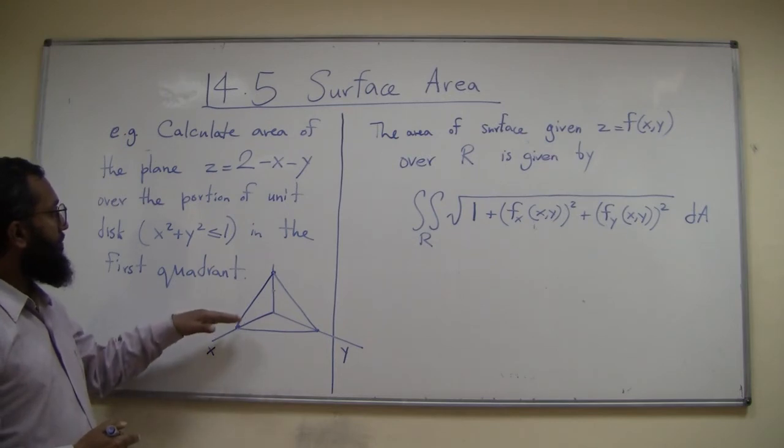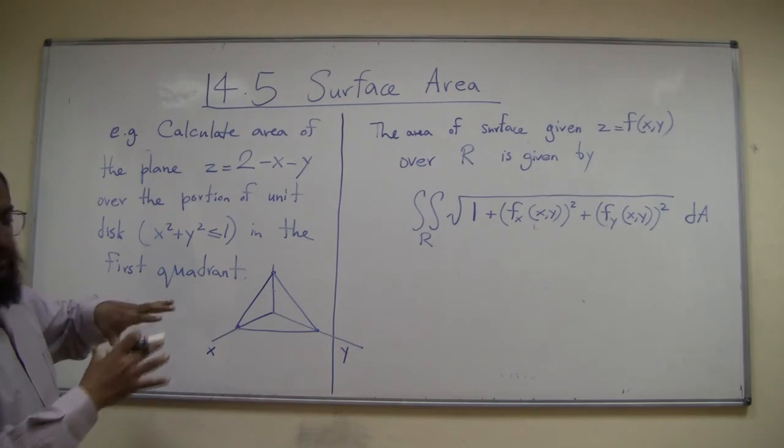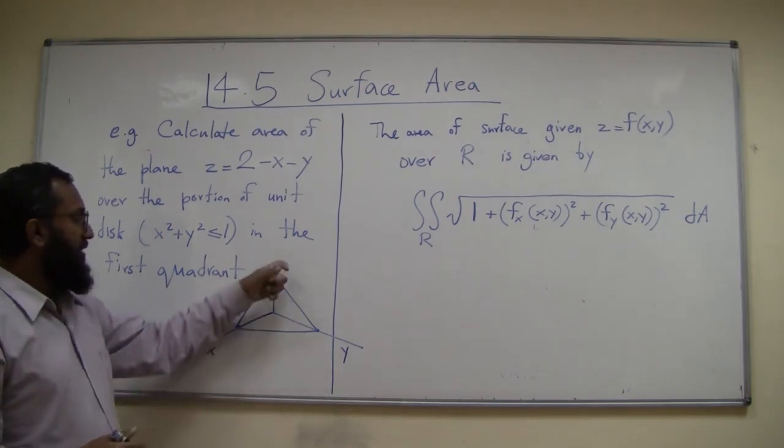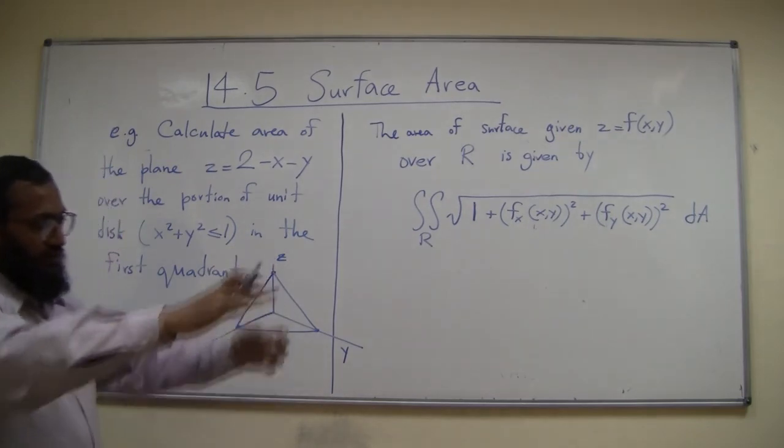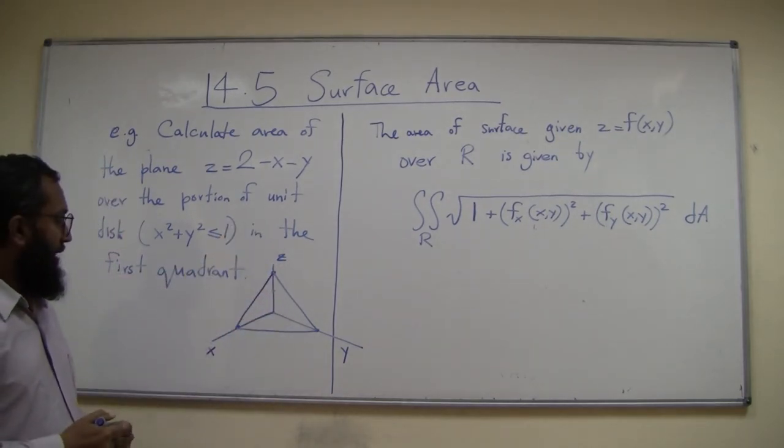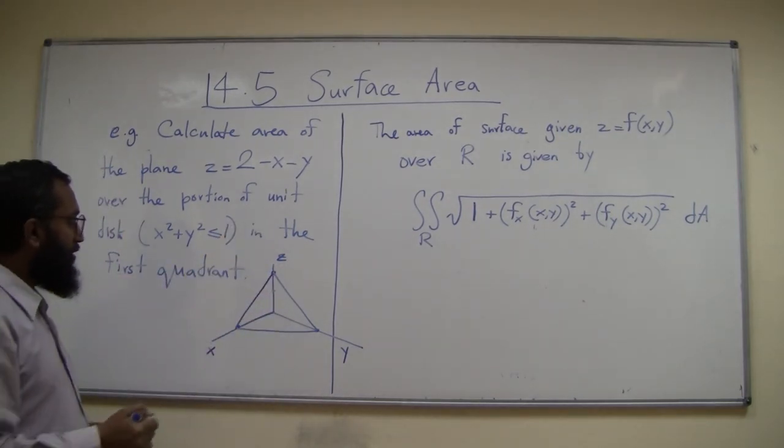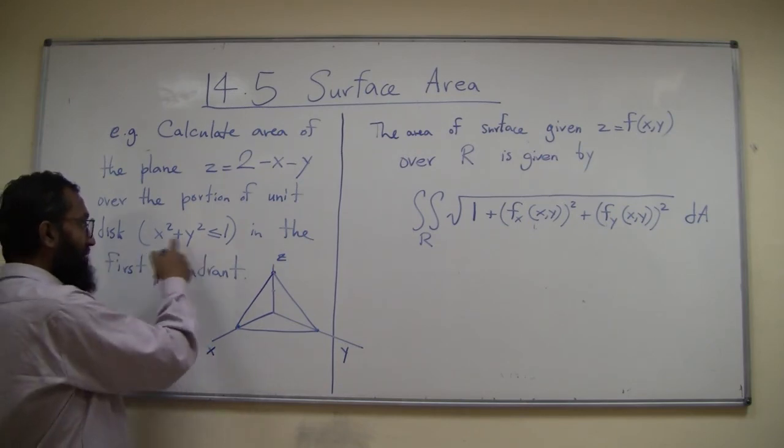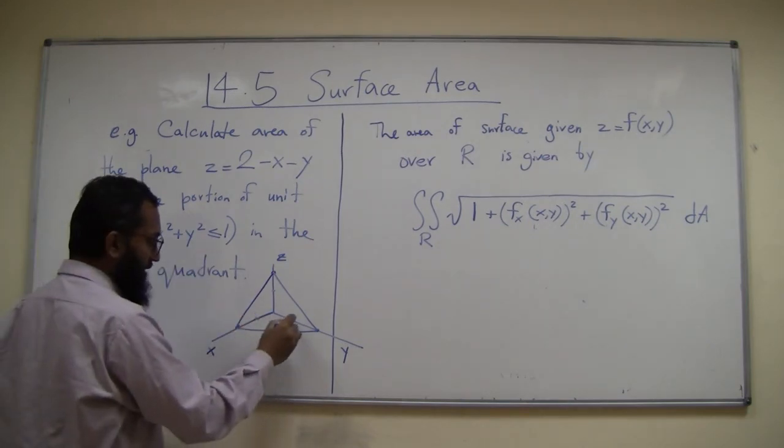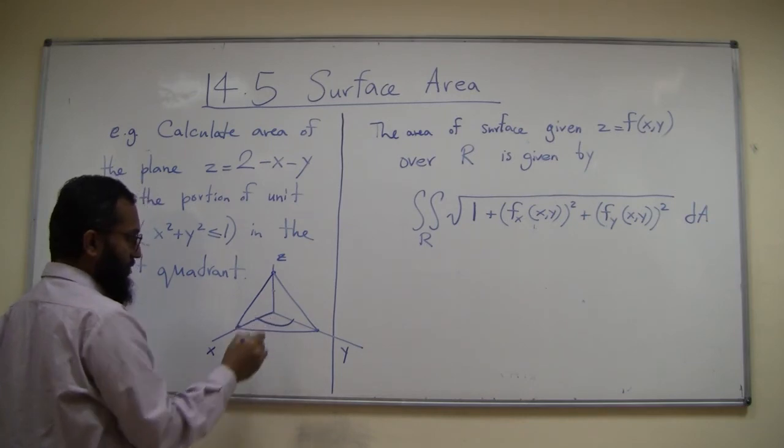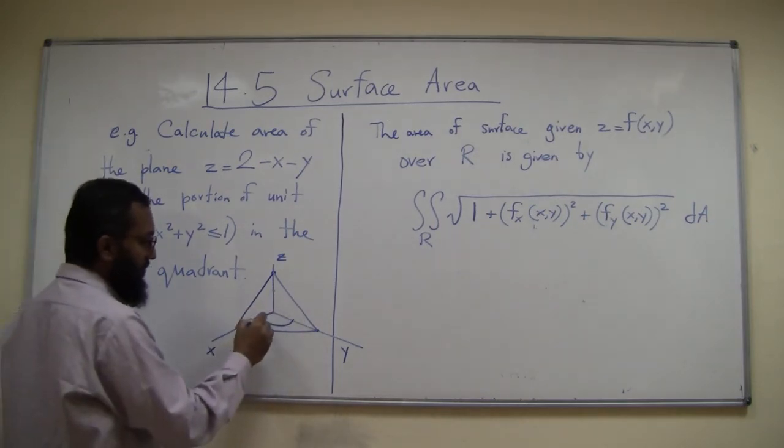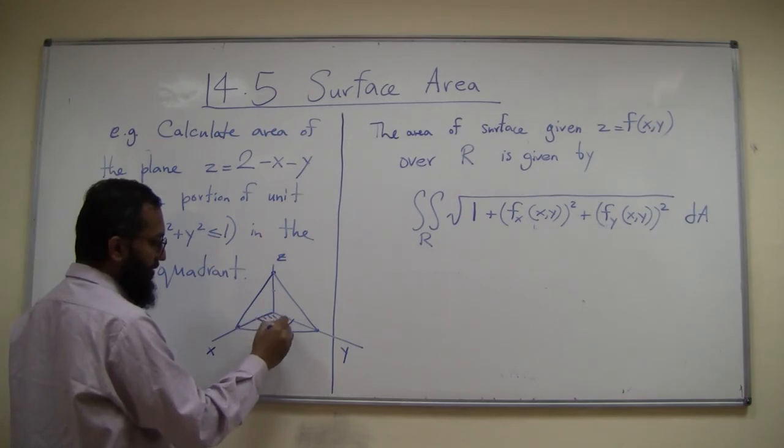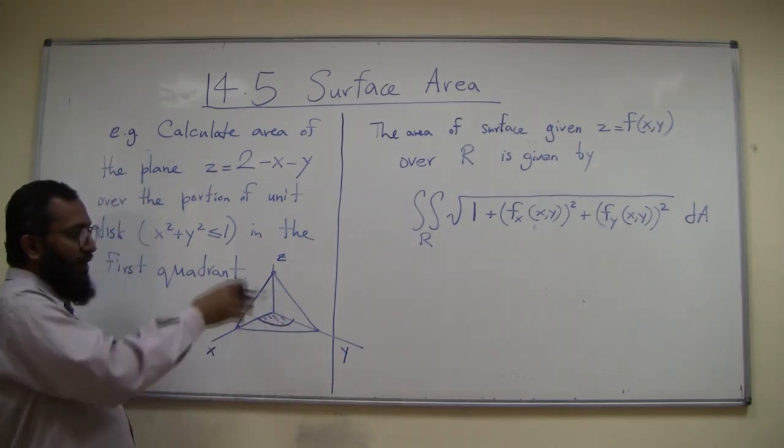And then you have the unit disk, the unit disk, you know, radius one, so like one is right here. Unit disk is continuous of course, but we are only in the first quadrant, so let's say this part here. So above that, the portion of the plane above that is basically...